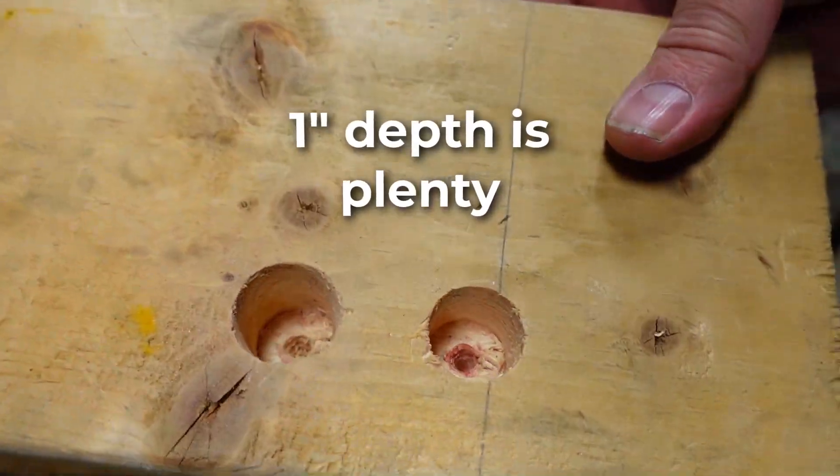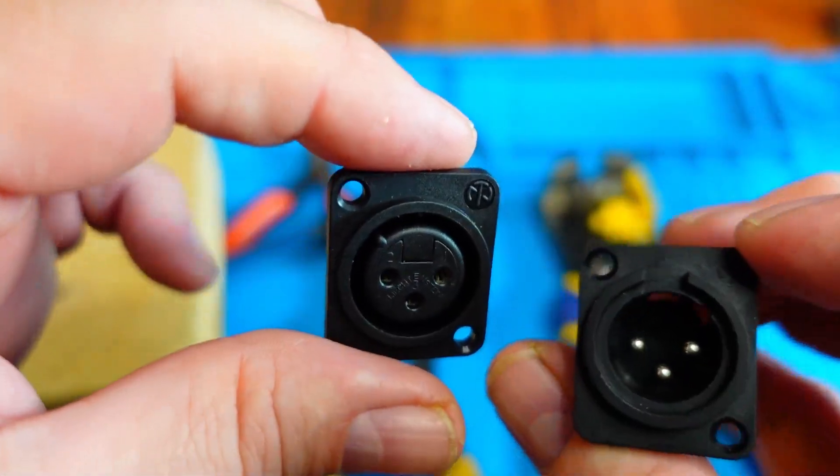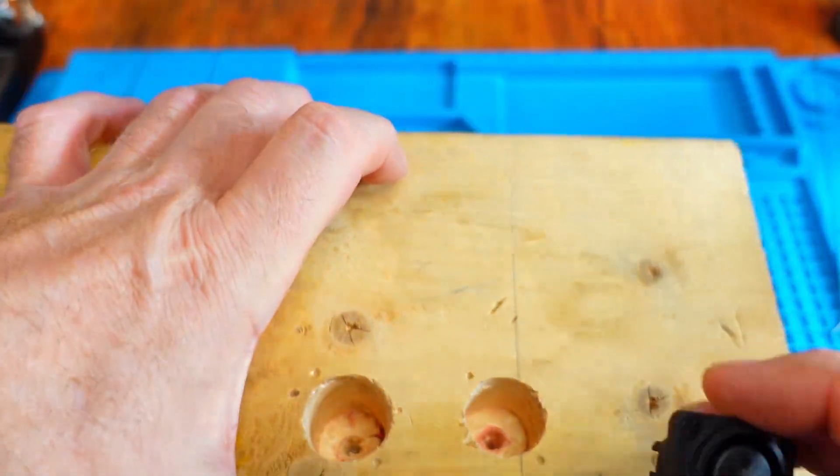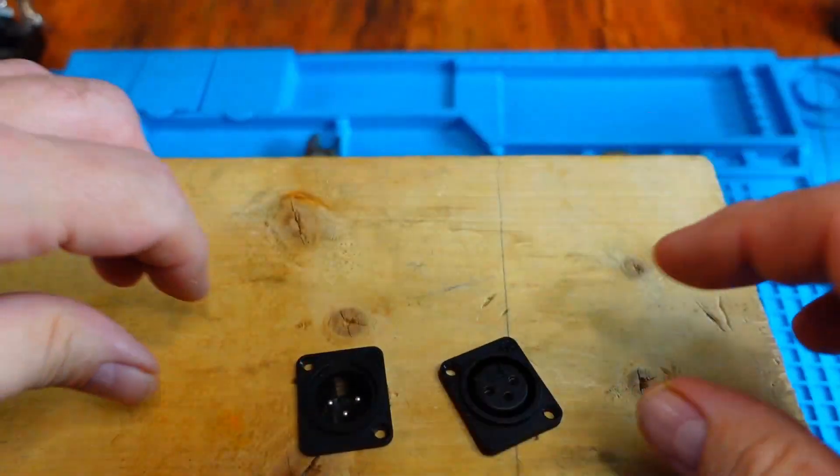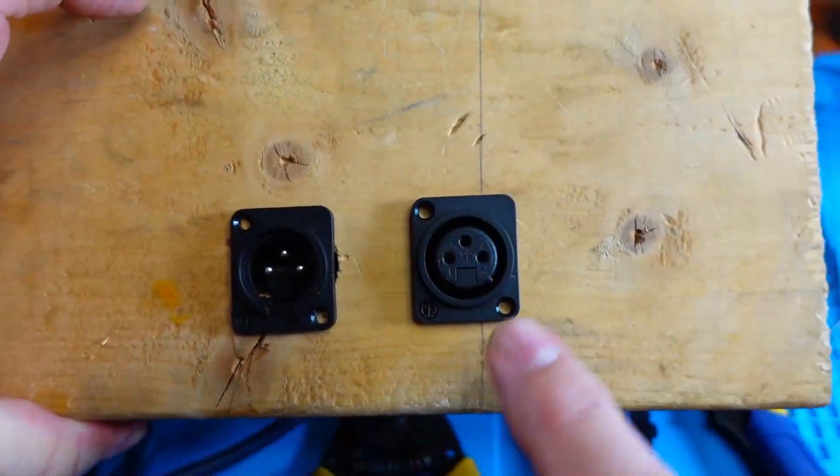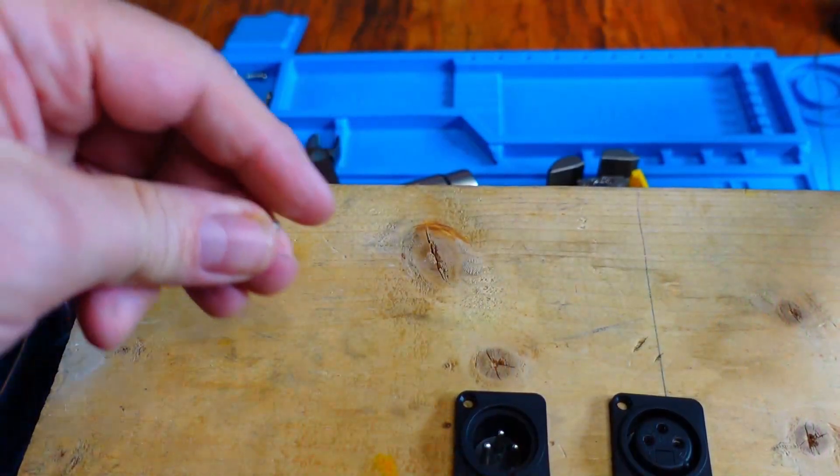The holes don't even have to go all the way through, but it's okay if they do. You just need the holes deep enough that the connectors will be able to flush mount. Drop the connectors into the holes like this. You want the center pin at the top—that might seem to be upside down, but stick with me. Now take a couple of small wood screws and mount these connectors.